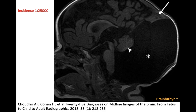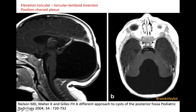In Dandy-Walker malformation there's a large cyst in the posterior fossa with a small vermis that has been rotated counterclockwise and lifted upwards. There's an abnormal high position of the confluence of the venous sinuses — the torcular — which is above the level of the lambdoid suture, hence the name torcular lambdoid inversion.